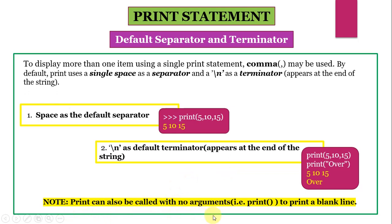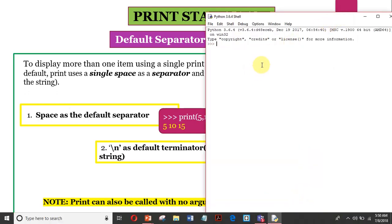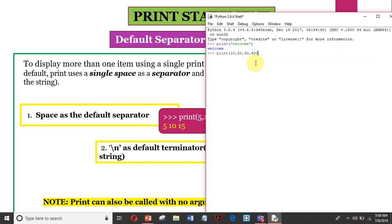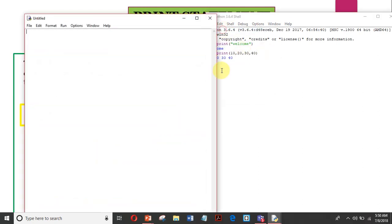Print can also be used with no arguments — that is, if we simply write print with empty parenthesis, it will give a blank line. So let us try all this in Python shell. If I write print('welcome'), you can see welcome will be displayed on the screen. And if I write print(10, 20, 30, 40), you can see all four numbers are displayed on the screen and they are separated by space.